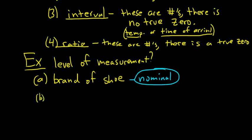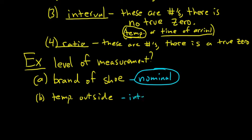Example B: temperature outside. Whenever you see temperature, you automatically know it's interval. The reason is zero is not the starting point for temperature — temperature could be negative degrees. So it's interval. Whenever you see temperature, it's always going to be interval.